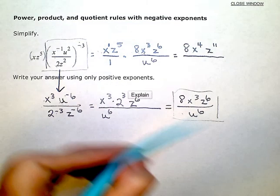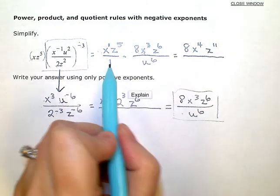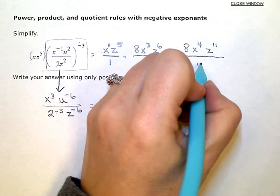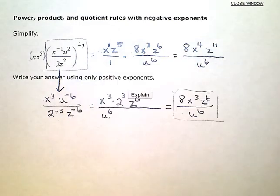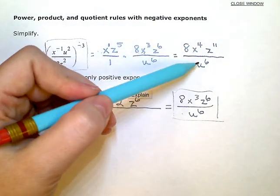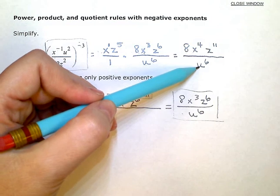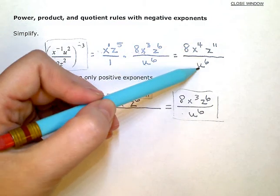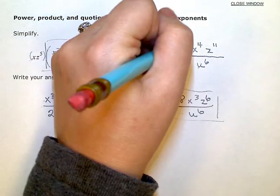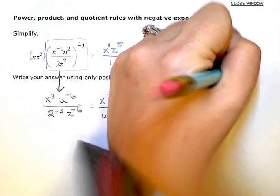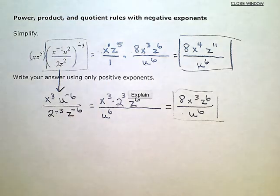And in the denominator, 1 times u to the 6th is just u to the 6th. I don't have any common factors, top and bottom. x and z in the numerator, u in the denominator. So, I can't cancel any factors, top and bottom, so that's my final answer.